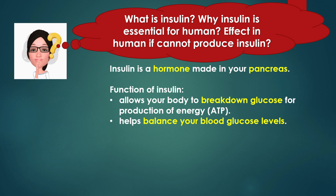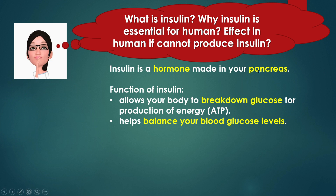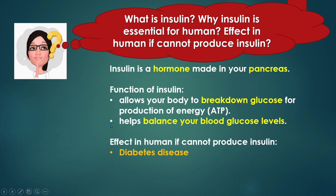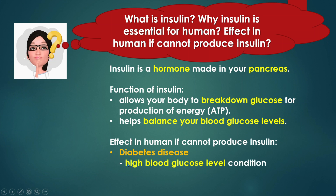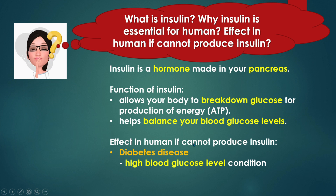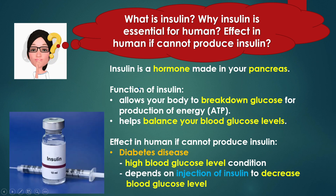What happens if an individual cannot produce insulin or if the pancreas fails to function? The individual will have diabetes disease, which is when the individual has a high blood glucose level condition. Since the glucose level in the blood is high and the individual cannot produce insulin, this individual will depend on injection of insulin to decrease the blood glucose level back to normal.